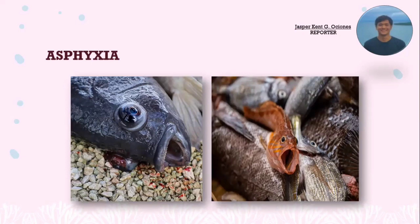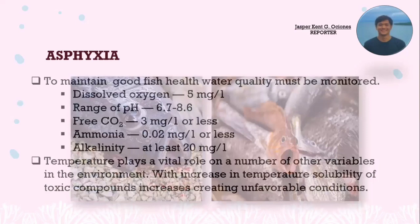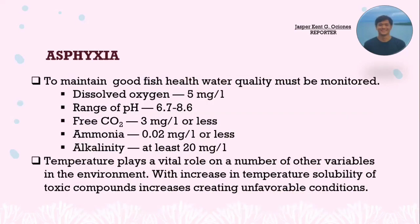The mouth is wide open and the gills are wide apart in a fish experiencing asphyxia. To maintain good fish health, water quality must be monitored: dissolved oxygen must be 5 mg/L; pH range must be 6.7 to 8.6; free CO₂ must be 3 mg/L or less; ammonia is 0.02 mg/L or less; and alkalinity is at least 20 mg/L. Temperature plays a vital role — with an increase in temperature, solubility of toxic compounds increases, creating unfavorable conditions.